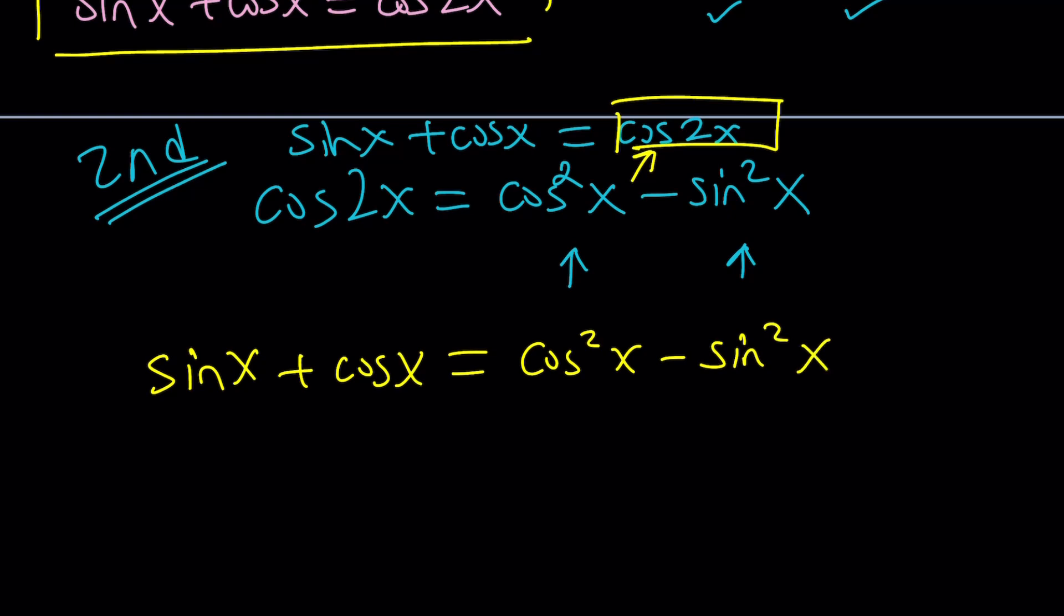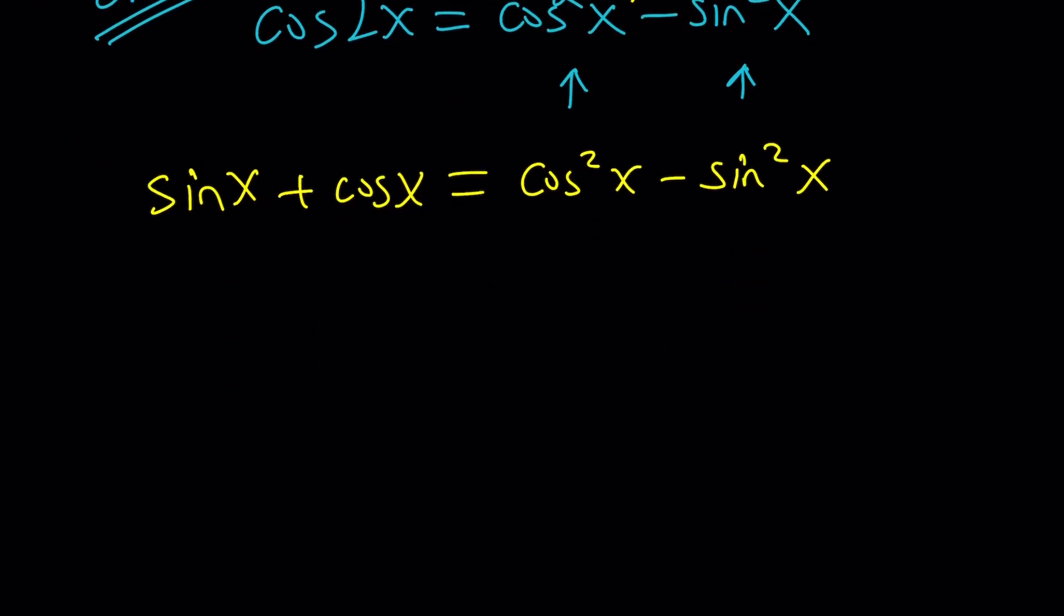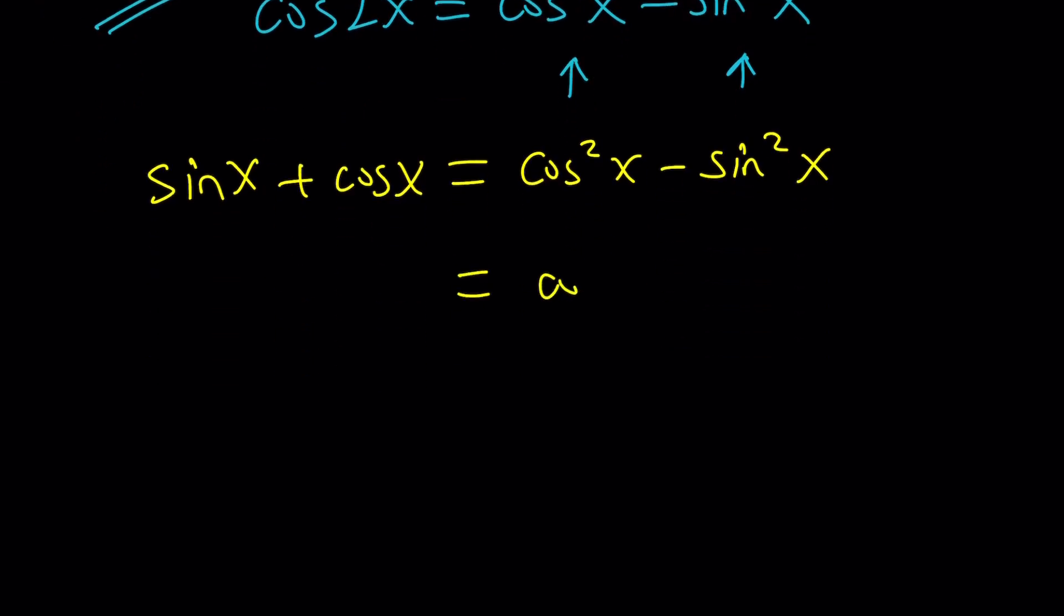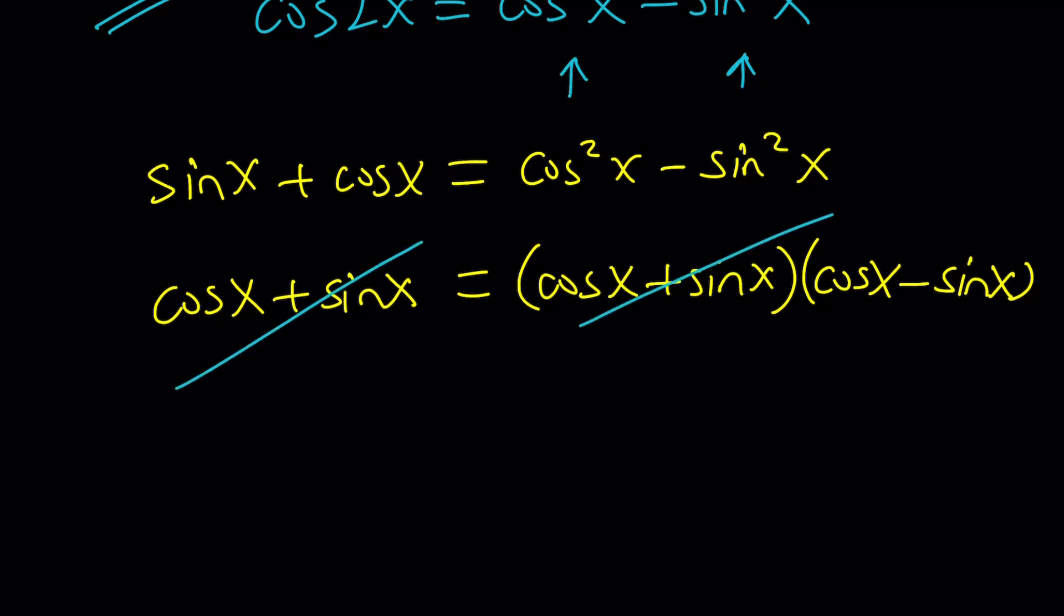Now, cosine squared x minus sine squared x is a difference of 2 squared. That's what's really nice about cosine of 2x, because it can always be written as cosine plus sine multiplied by cosine minus sine. And that equals cosine plus sine. I'm just going to switch them around, so it kind of fits the form on the right-hand side. Now, what can I do with this equality? And you're probably immediately thinking, cancel these out. No, don't do that.